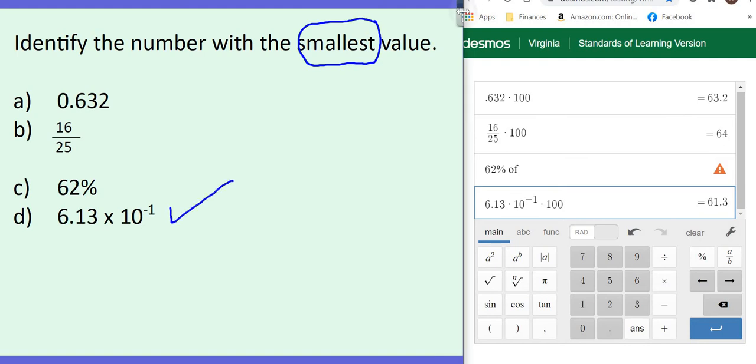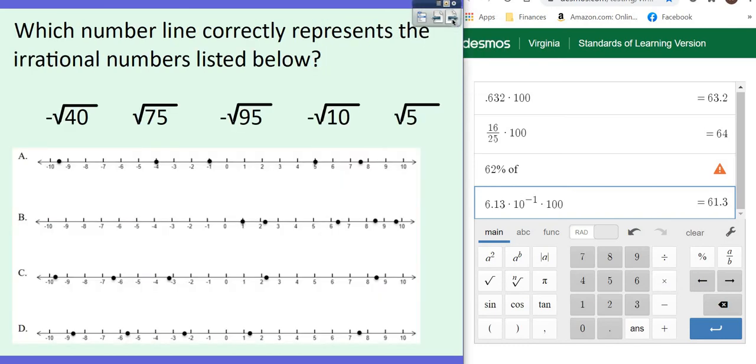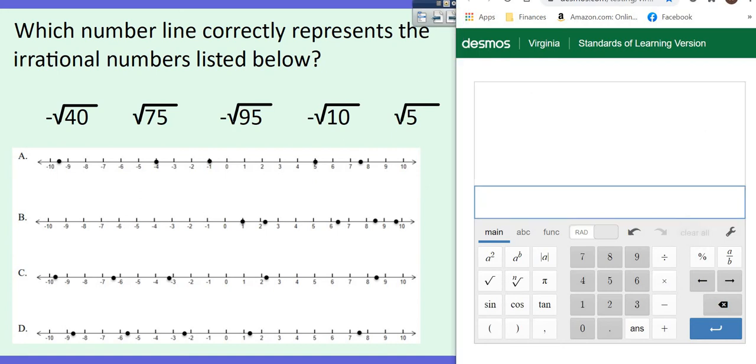If you need to look back, just stop the video, rewind, and watch it again. Let's go on to our next one. All right. This says which number line correctly represents the irrational numbers listed below.